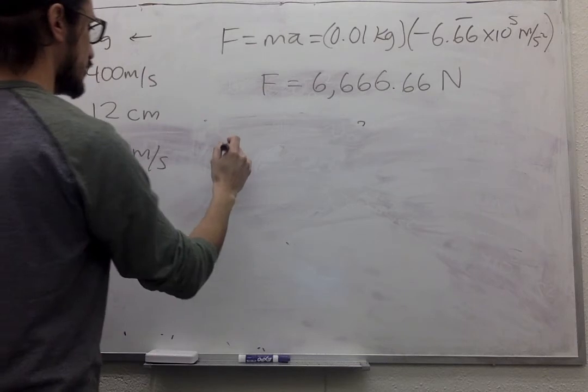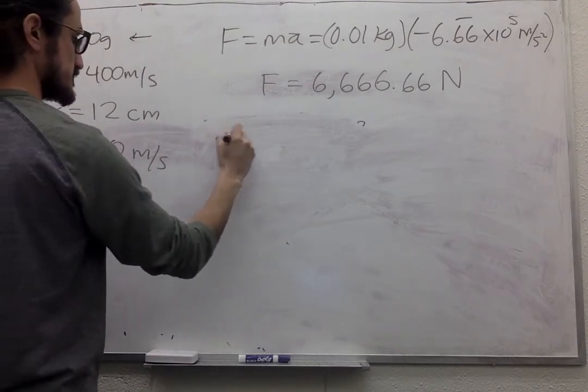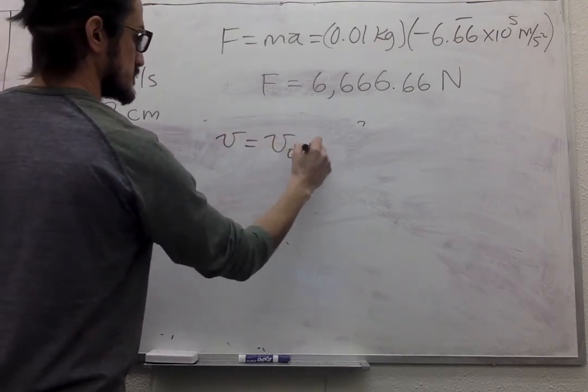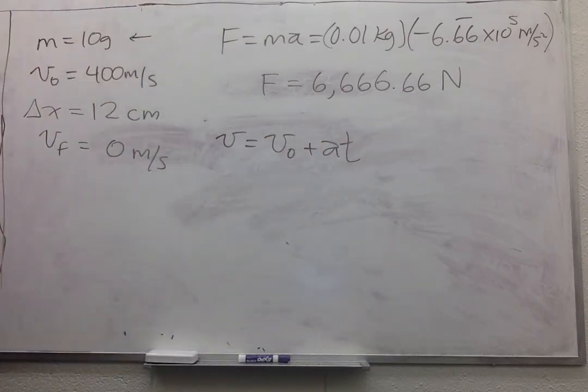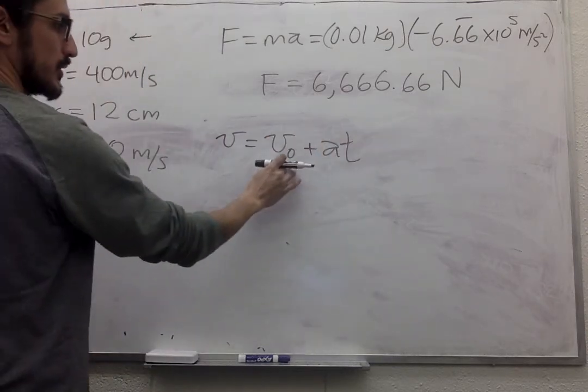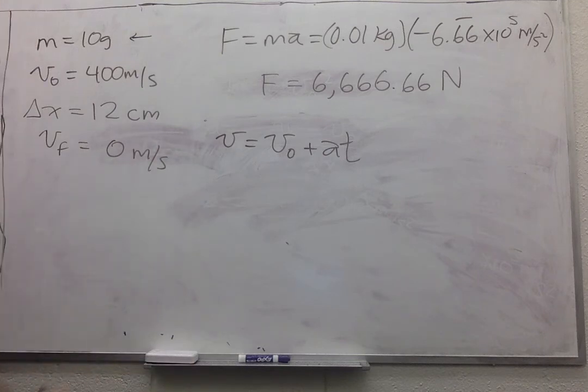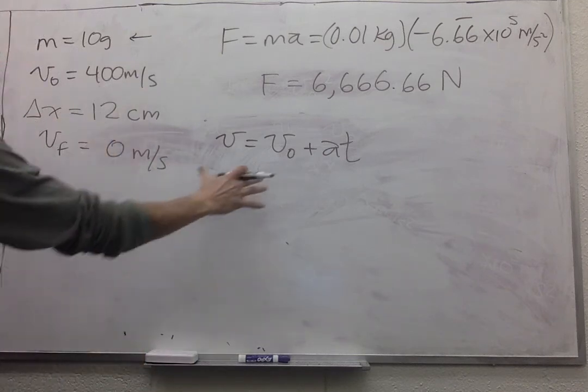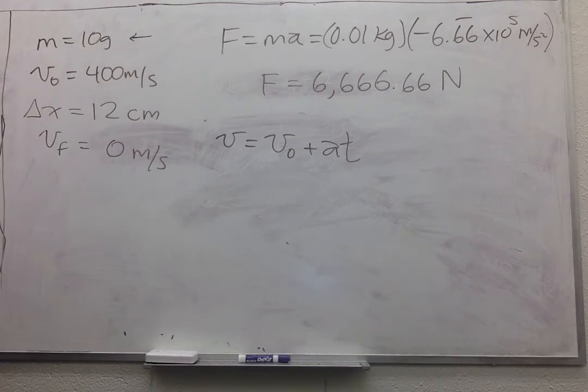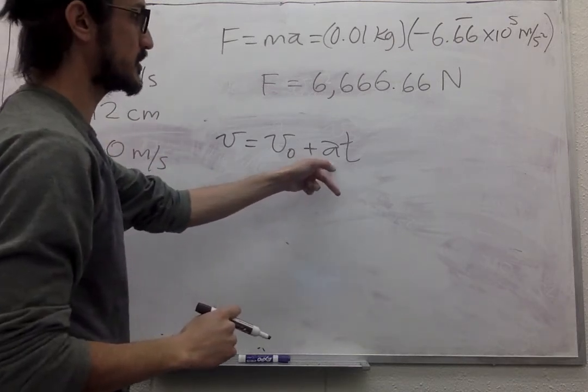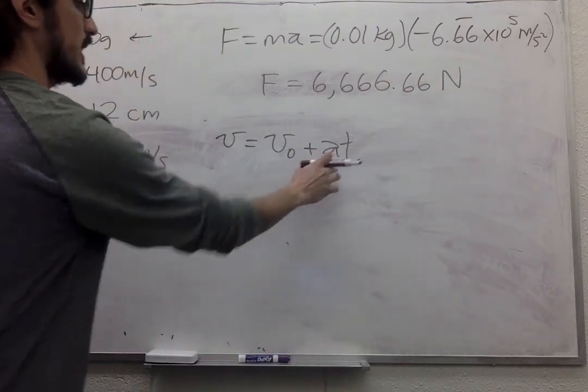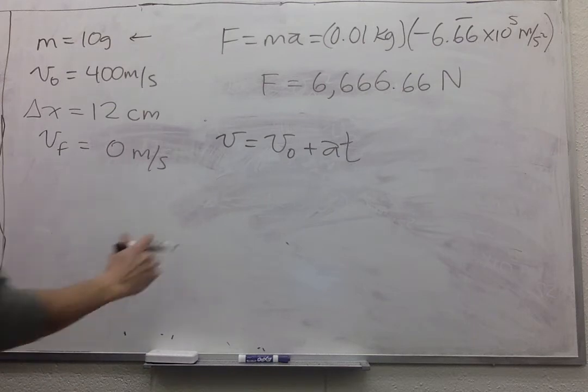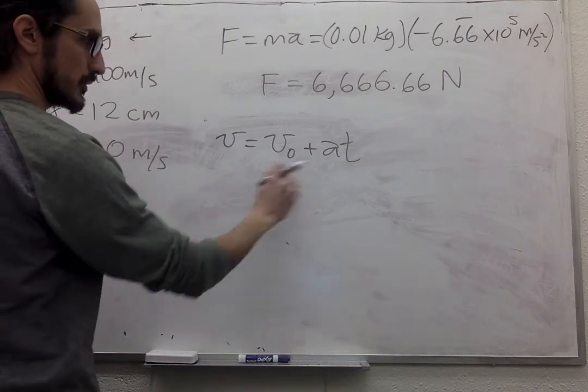So we can use this kinematic equation. We know that the initial velocity is 400, the final velocity is 0, the acceleration is this over here, and the time, that's what we want. So we solve for the time.